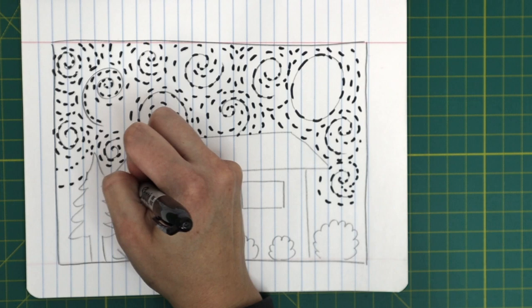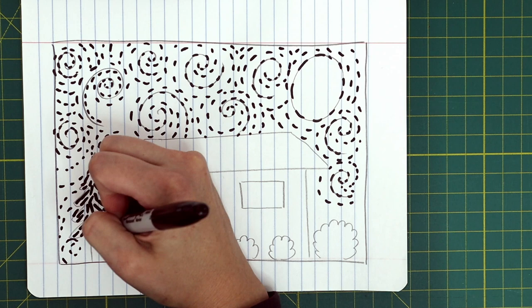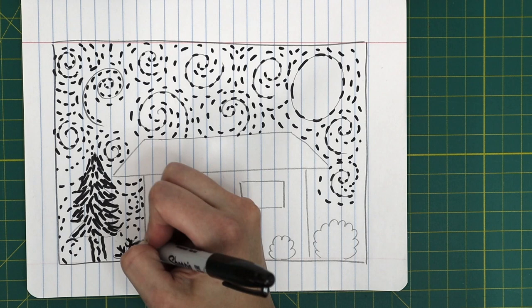When your sky is done, add implied texture to your trees by using straight, short lines. Do the same with your grass. For your shrubs, fill them with curved lines.